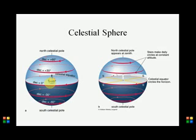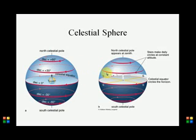This absolute coordinate system is used for the celestial sphere. It differs from the sky dome, which depends on your specific position on Earth — each observer has their own sky dome. We will understand this distinction more in the coming slides.